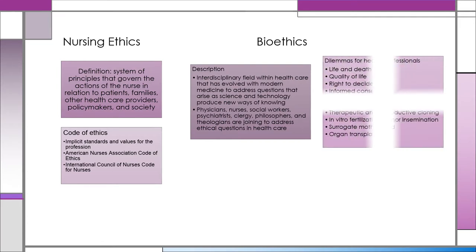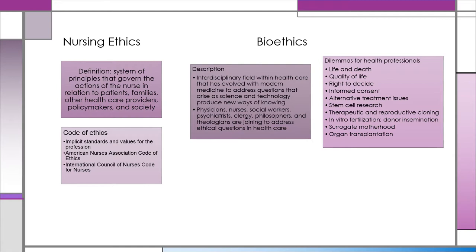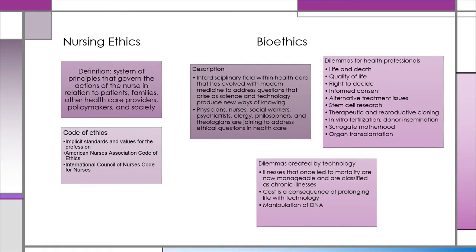Some of the dilemmas for health professionals that are addressed are life and death, quality of life, right to decide, informed consent, alternative treatment issues, stem cell research, therapeutic and reproductive cloning, in vitro fertilization or donor insemination, and surrogate motherhood or organ transplantation. Some dilemmas are created by technology — illnesses that once led to mortality are now manageable and classified as chronic illnesses. Cost is a consequence of prolonging life with technology, and then we have the manipulation of DNA.